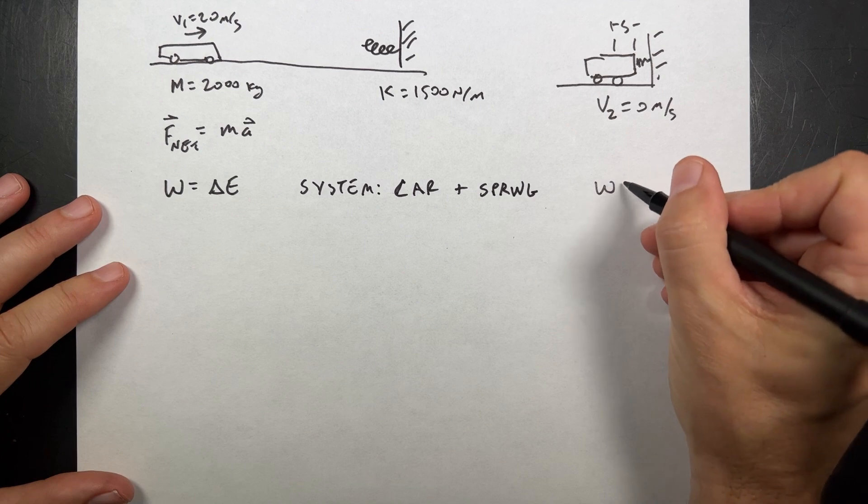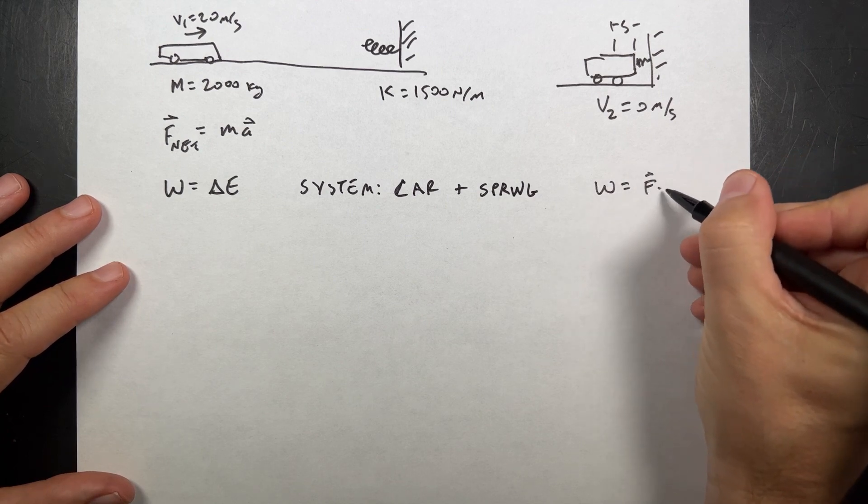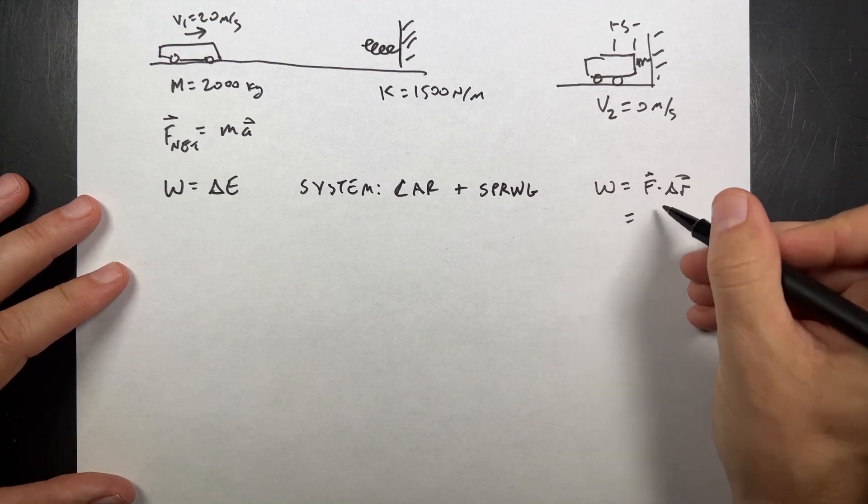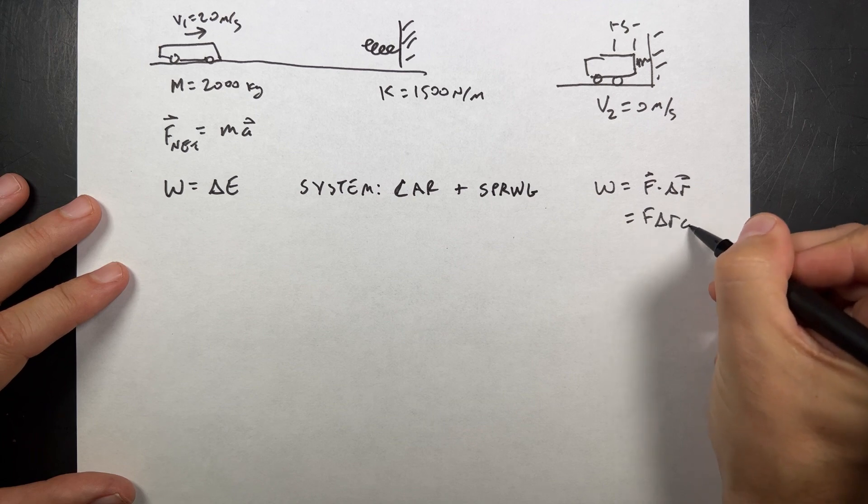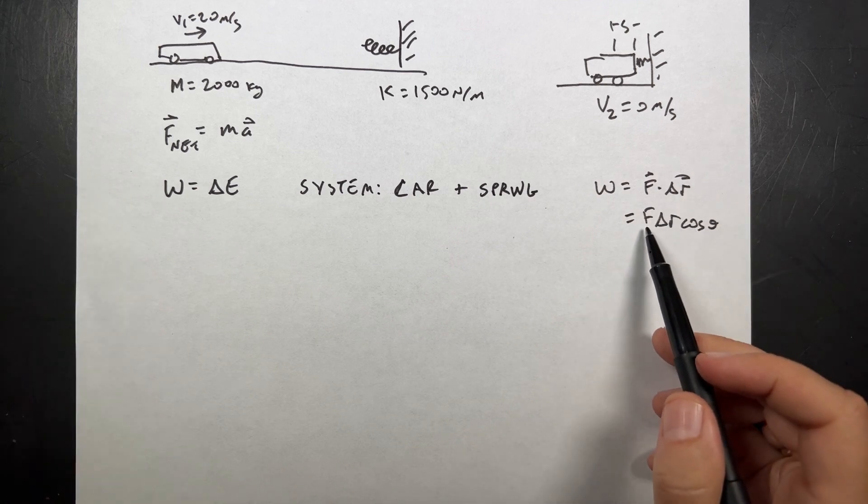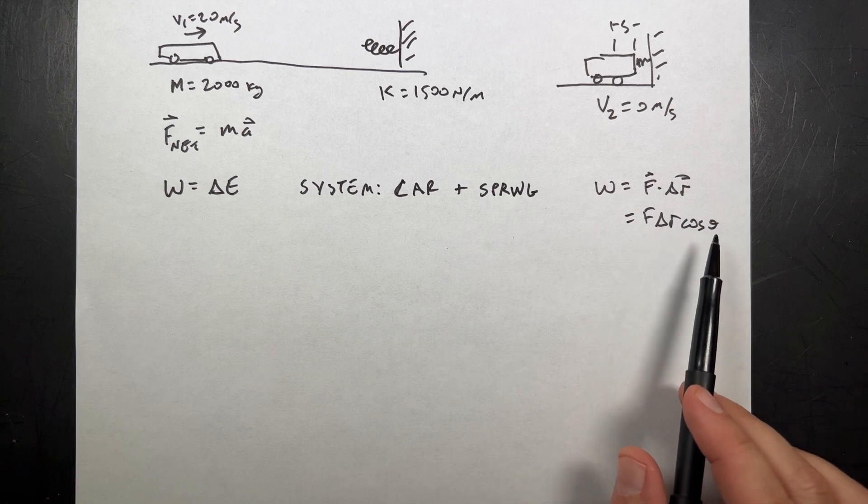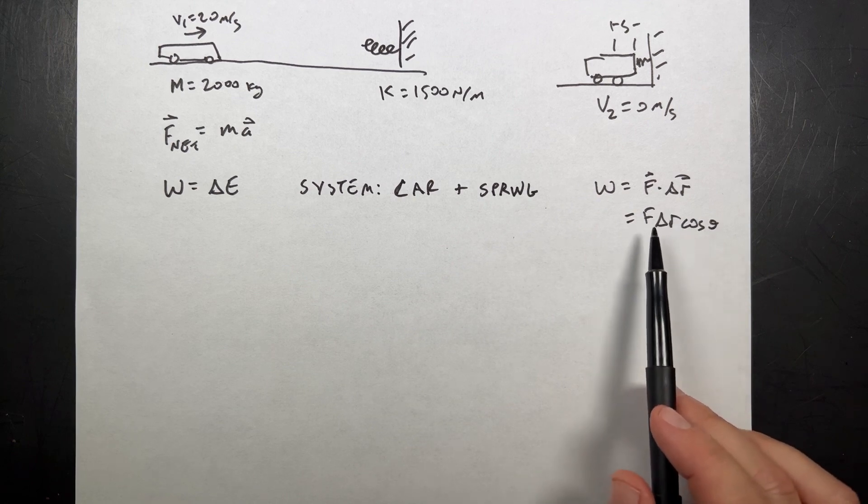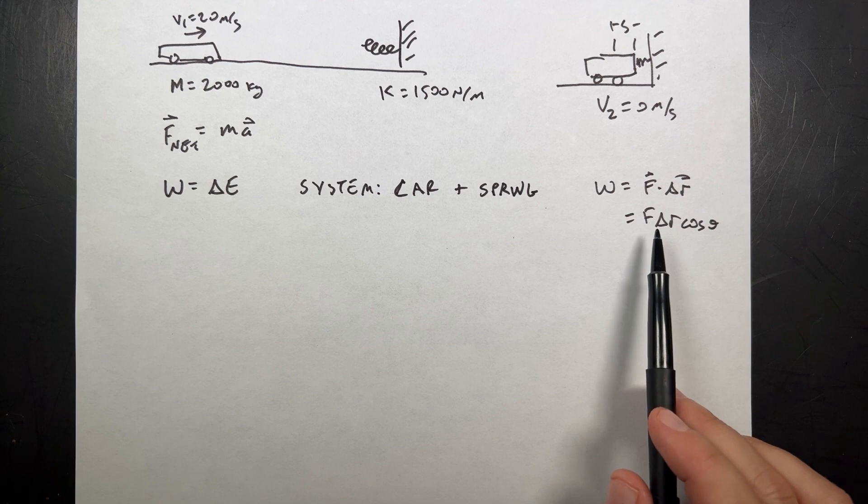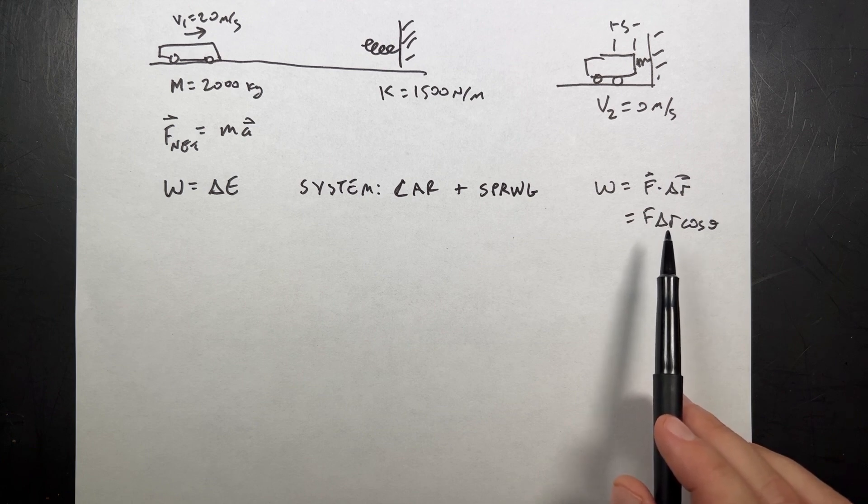right? Because if I had to say work as F dot delta R or F delta R cosine theta, where F is the force doing the work, delta R is the displacement, and theta is the angle between them, I still have a problem, right? Because the spring is still exerting a non-constant force. So this would be non-trivial to calculate. Not impossible. Just non-trivial.